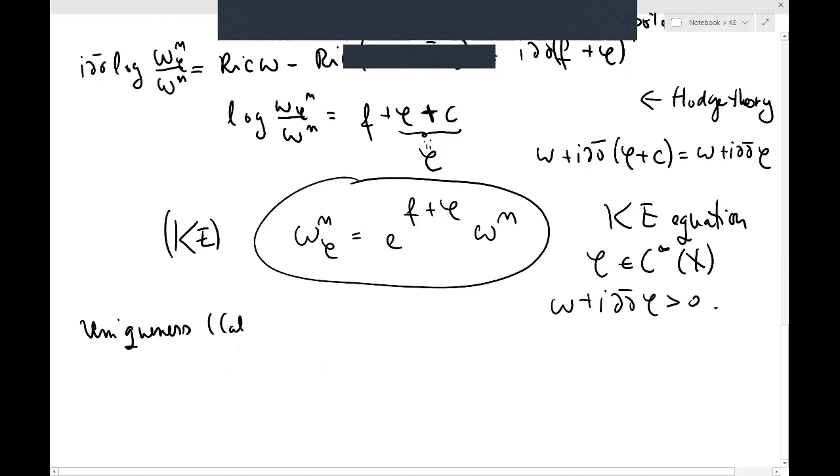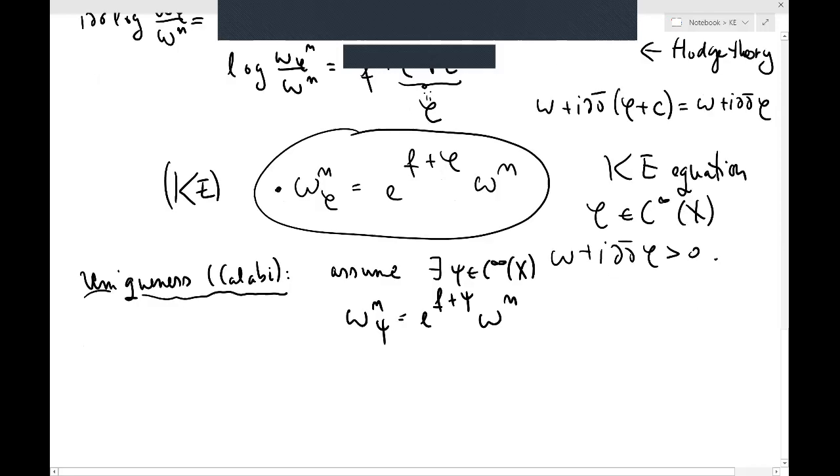So I think this uniqueness result goes back to Calabi, who, in many ways, was the initiator of the study of canonical Kähler metrics. So assume that in addition to this φ solving the equation, we also have a ψ that solves this equation. Okay, so both solve KE. So what you can do is just divide this equation by that equation, and you will get omega_φ over omega_ψ, there's some simplification equal to e^(φ minus ψ).